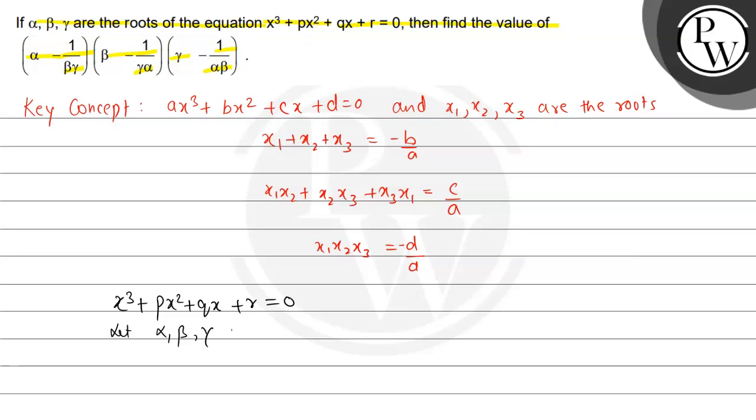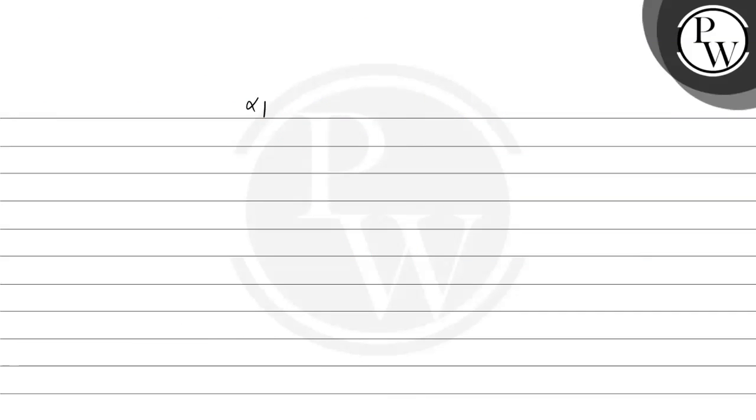Alpha, beta, gamma are the roots. So we have alpha plus beta plus gamma is equal to minus p. Alpha beta plus beta gamma plus gamma alpha is equal to q. And the product alpha beta gamma is equal to minus r.